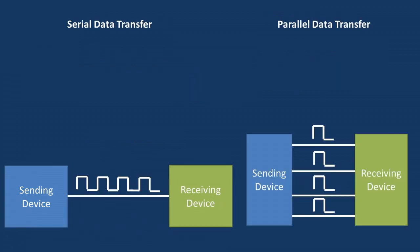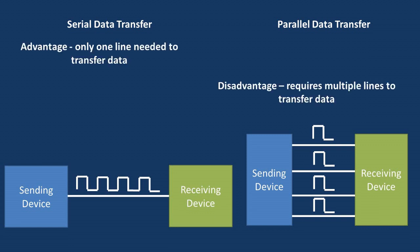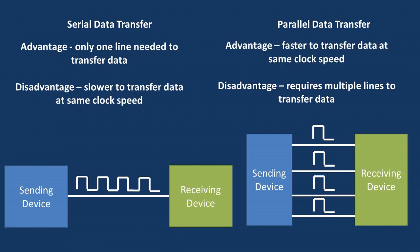Now let's go over the advantages of serial data transfer versus parallel data transfer. The major advantage of serial data transfer is that only one line is needed to transfer the data, which can result in a lower cost due to not having redundant components compared to parallel. The major advantage of parallel data transfer is that you can transfer data faster assuming the same clock speed.